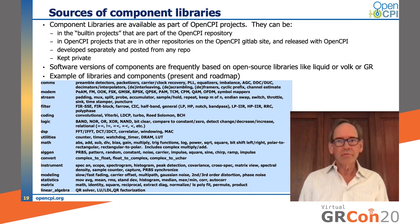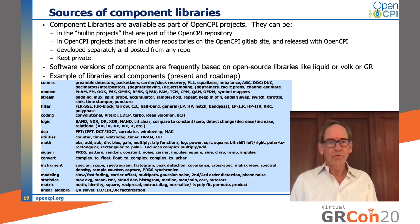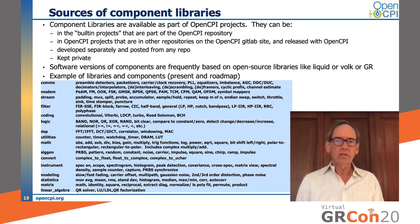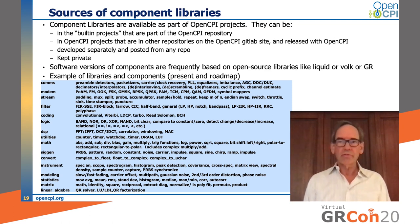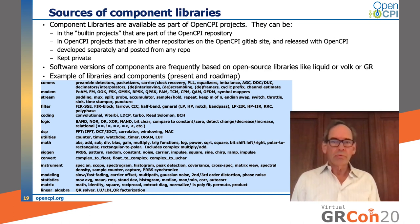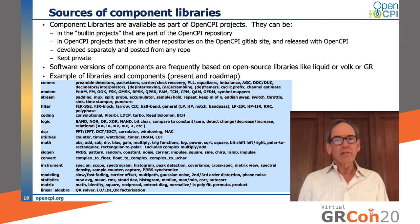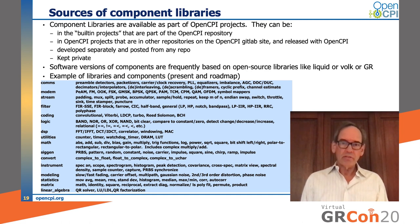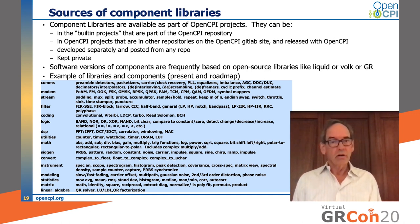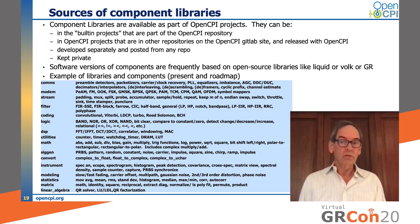Component libraries used by application developers can come from a number of different places: the built-in projects in the OpenCPI repository containing a basic set of components, other OpenCPI projects in other repositories on the OpenCPI GitLab site usually contributed by third parties, and component libraries accessible via the Internet or privately inside other organizations. Component libraries frequently use available source codes from existing libraries when they are available as open source with acceptable licenses. The table below shows a categorized set of possible components, some available now, some under development, and others awaiting development or contribution.